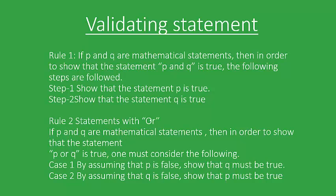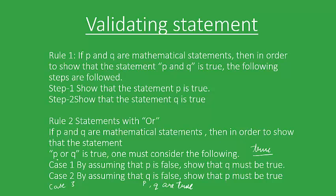To prove 'p or q' is true, we can have three cases. Case one is when p is false and q is true. Case two is when p is true and q is false. Case three is when both p and q are true. In all these cases, the compound statement is true.